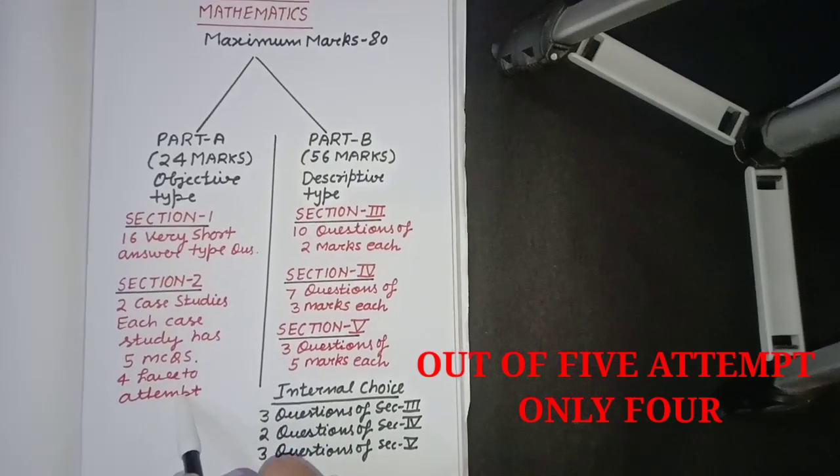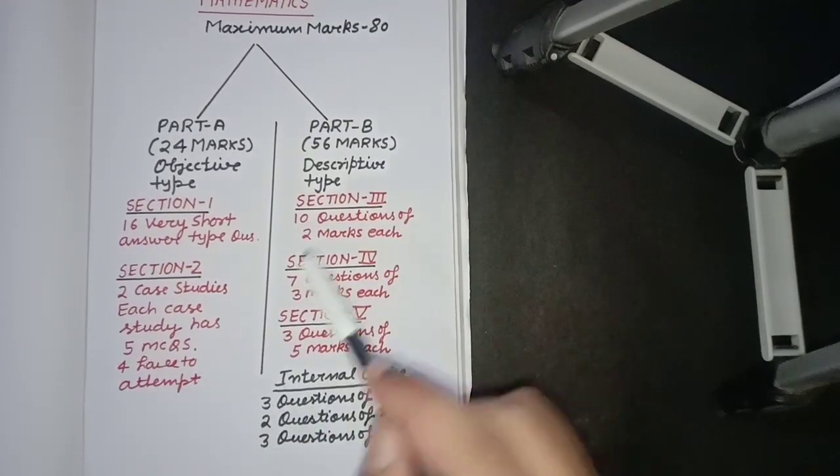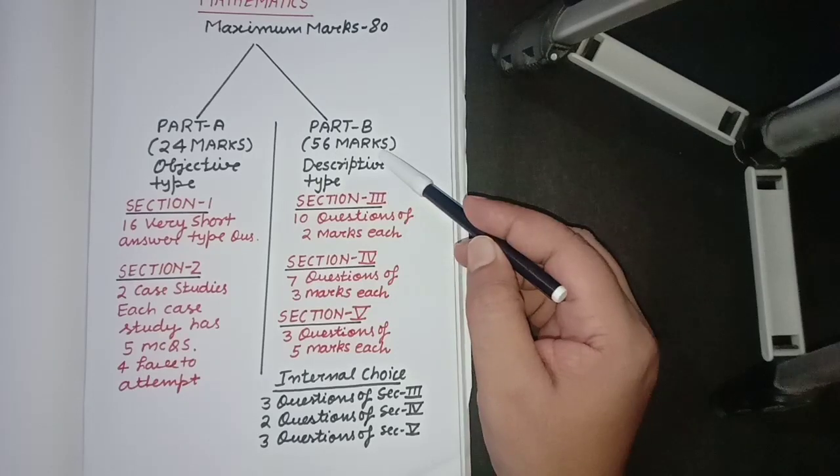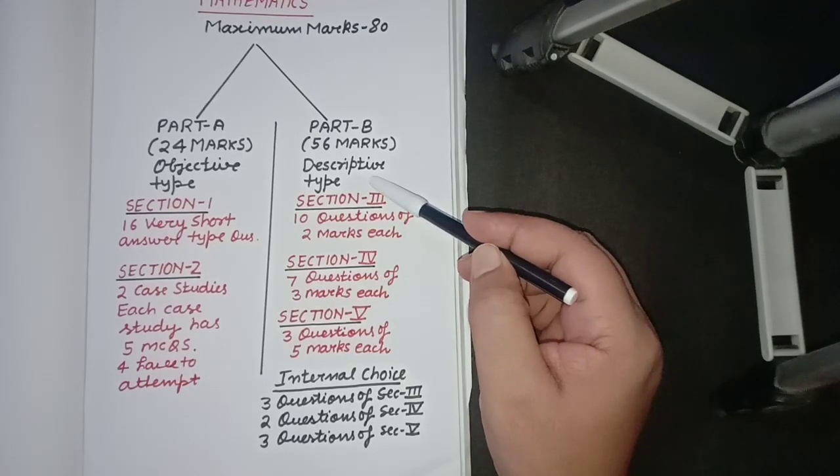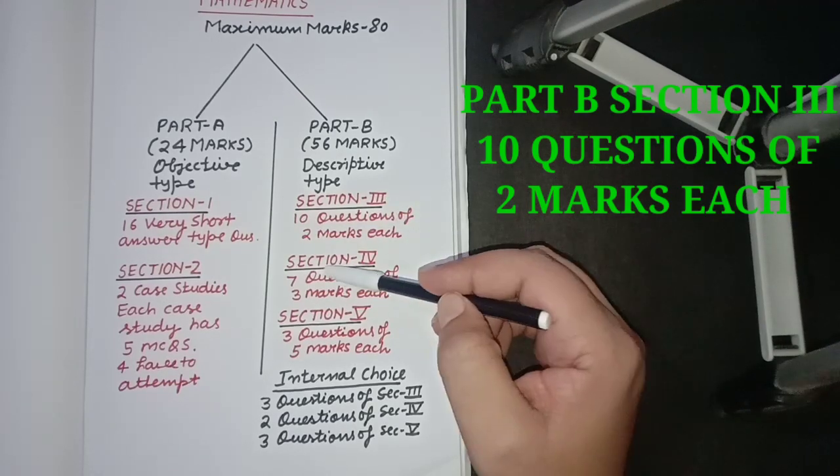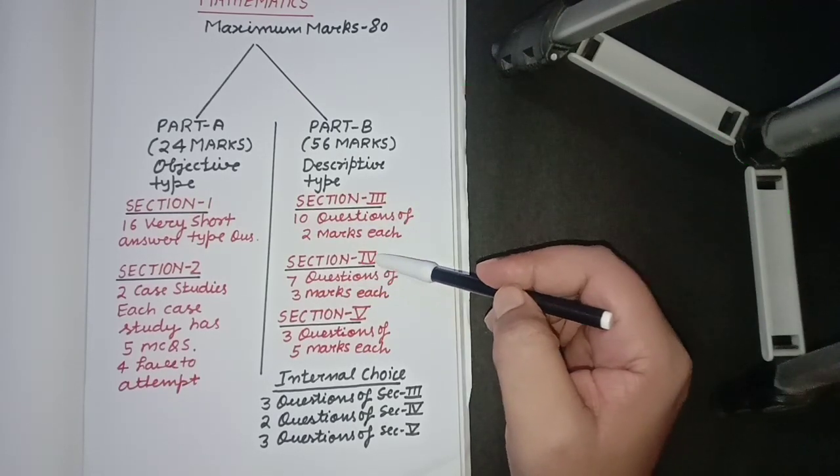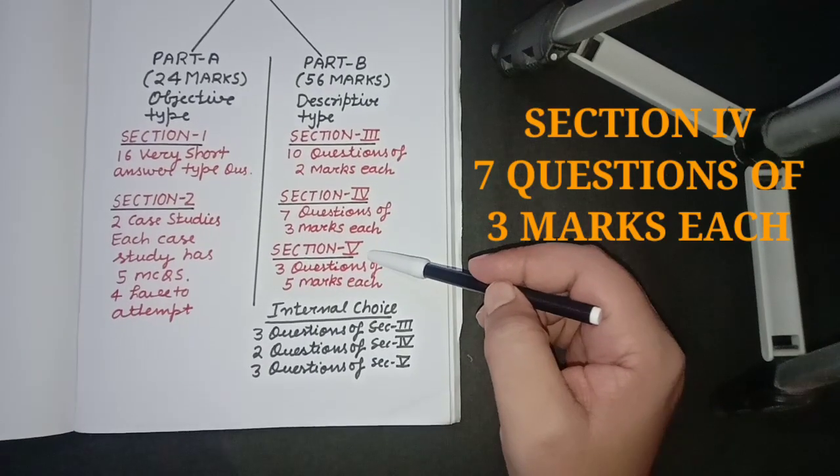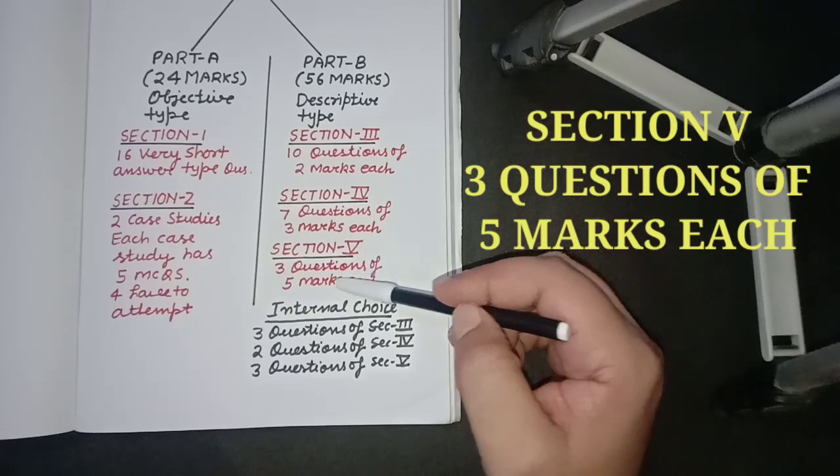Now Part B consists of 56 marks. It will be of descriptive type. It consists of Section 3 in which 10 questions of two marks will be asked. In Section 4, seven questions of three marks will be asked, and in Section 5, three questions of five marks each will be asked.